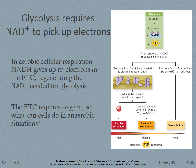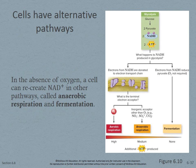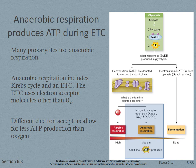The electron transport chain requires oxygen — it was the last electron acceptor. In anaerobic situations without oxygen, cells can go through anaerobic respiration or fermentation. Some prokaryotes use anaerobic respiration where the electron transport chain still operates, but instead of oxygen, other molecules such as NO3−, SO4²−, or CO2 accept the electrons. These produce less ATP than when oxygen is the final acceptor.